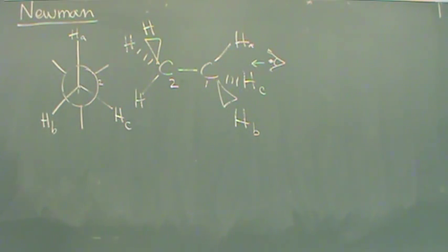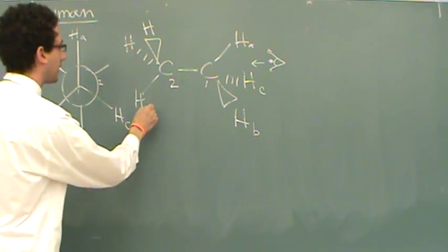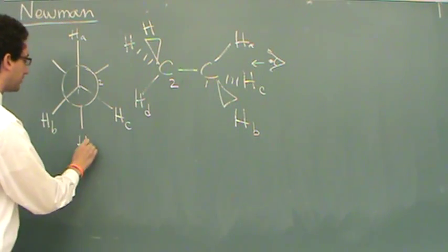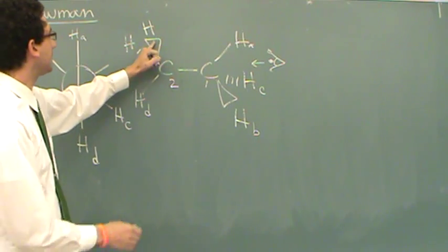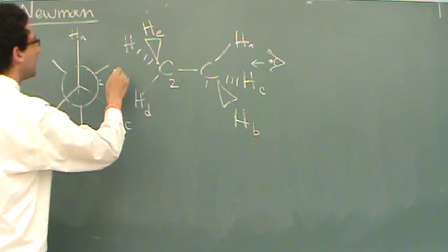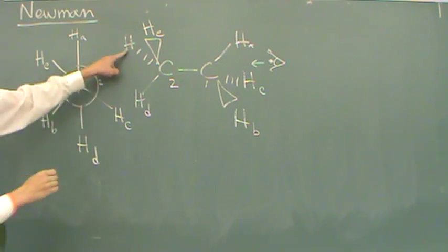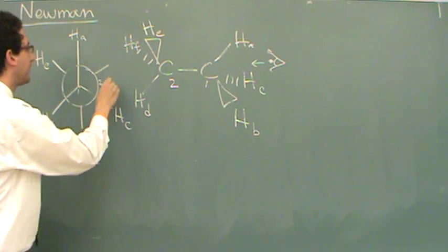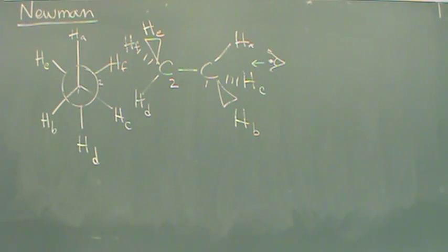As you look past the first carbon to the second carbon, you'll see this hydrogen down here. I'll call it hydrogen D. That's this one. As you look again past, you see this hydrogen. I'll call it hydrogen E. It's slightly to the left. And then you'll see hydrogen F. That's this one right here, slightly to the right, as it looks straight on.